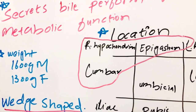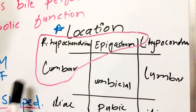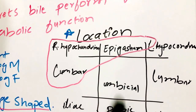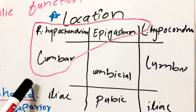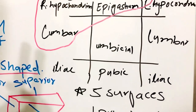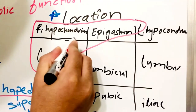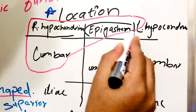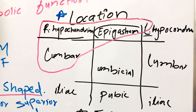If we talk about the location of liver, first of all we have nine regions of the abdomen: we have our right hypochondrium, epigastrium, left hypochondrium, umbilical region, lumbar region, and iliac region. The liver lies in the right hypochondrium, epigastrium, and a little bit across into the left hypochondrium.